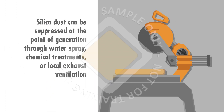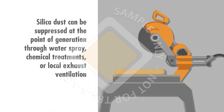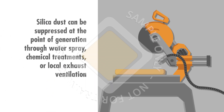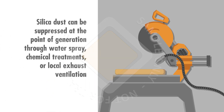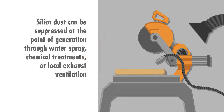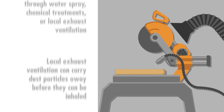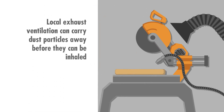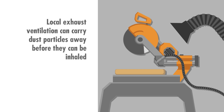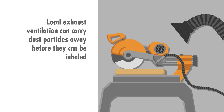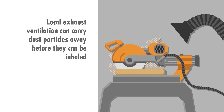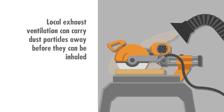Silica dust can be suppressed at the point of generation through water spray, chemical treatments, or local exhaust ventilation. Local exhaust ventilation can carry dust particles away before they can be inhaled.